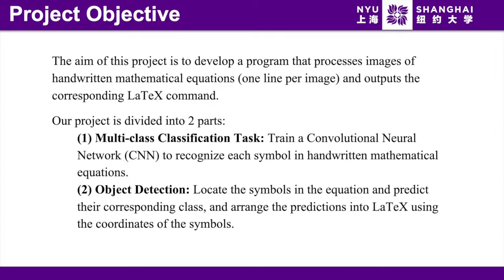We first do a multi-class classification task. Train a convolutional neural network to recognize each symbol in handwritten mathematical equations. And then we do object detection. Locate the symbols in the equation and predict their corresponding class, and arrange their predictions into LaTeX using the coordinates of the symbols.